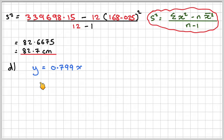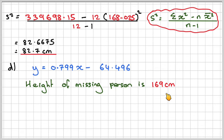So in the last part, we got that the line of best fit is 0.799x minus 64.496. This x stands for the height, y stands for the weight. So the height given was, of the missing person, was given as 169. So what we need to do is substitute 169 in there.